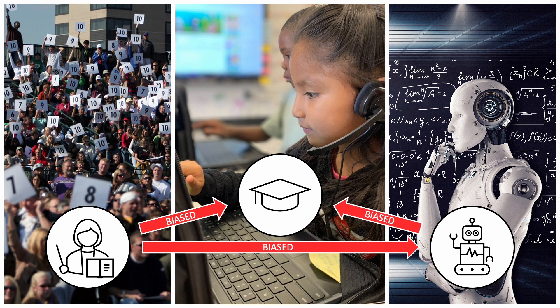In my research, I'm applying these de-biasing techniques for the first time to standardized language tests. To accomplish this, I first trained a machine to score the English-speaking test. Although it's able to score speech as accurately as human raters, it also learned human raters' biases. Now that I have an accurate, but biased, automated scoring system, I'm teaching the machine how to identify biases and how to stop acting on them.